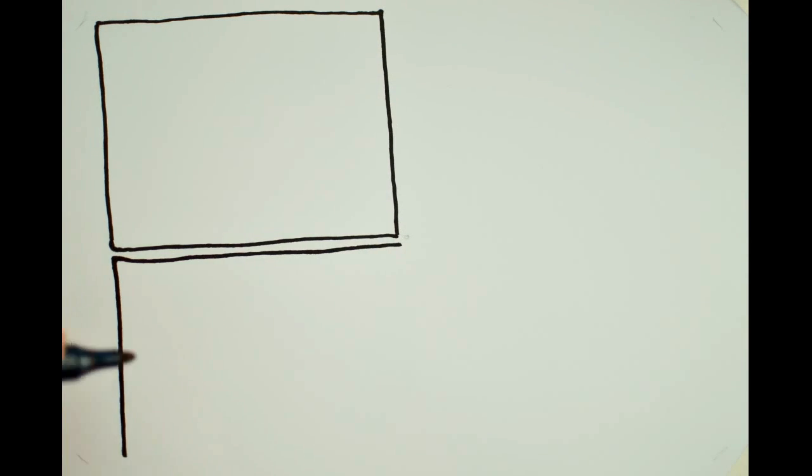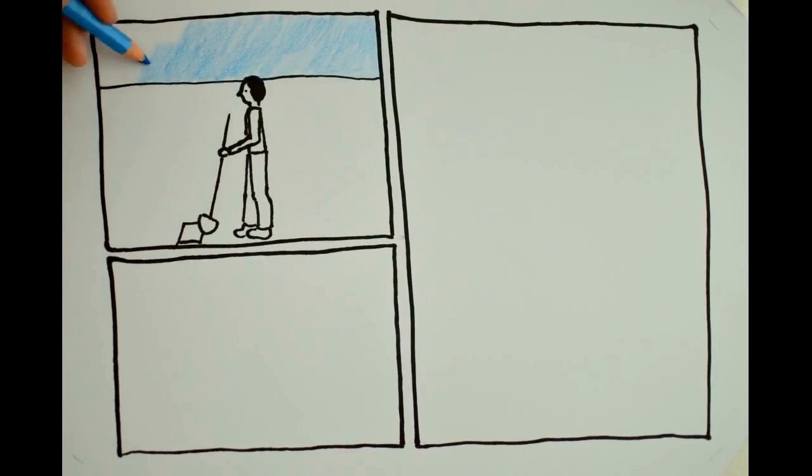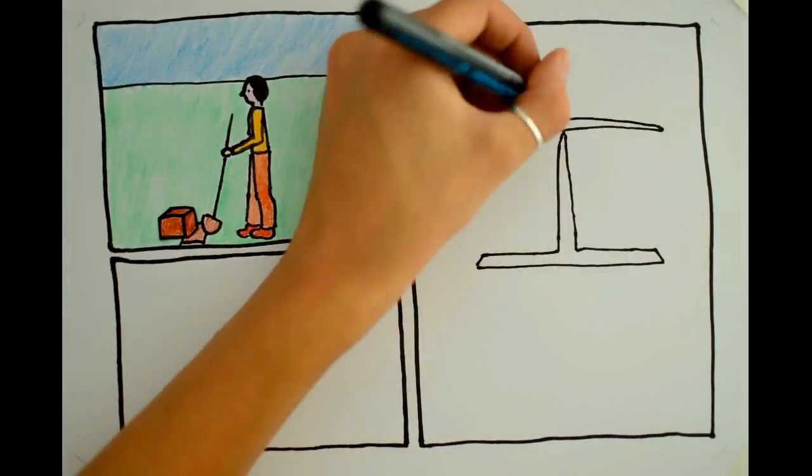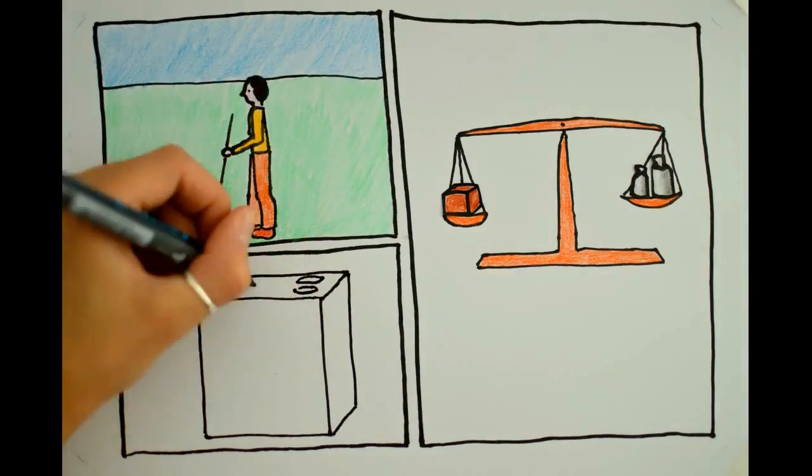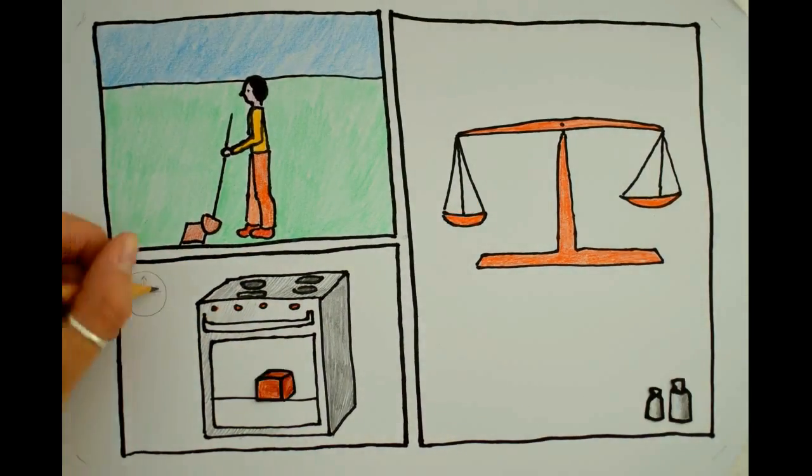And now we approach the big question, how to measure soil moisture? The oldest method to measure soil moisture is direct. First, you have to extract a soil sample and measure its weight. Then the soil sample is dried in a special oven over a few hours.